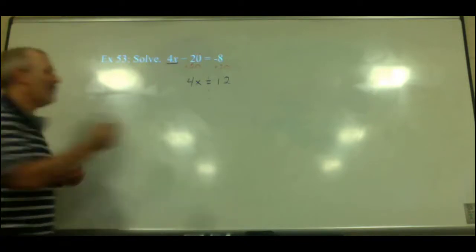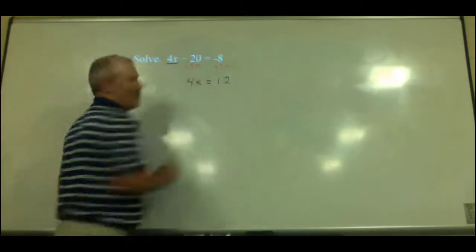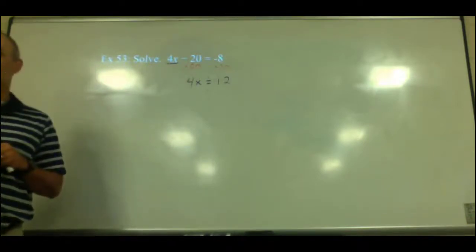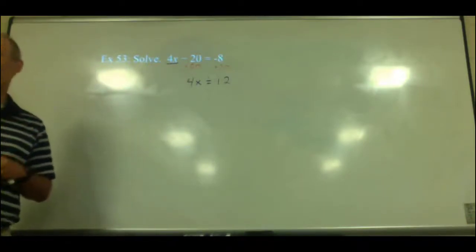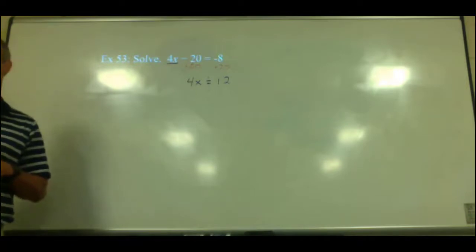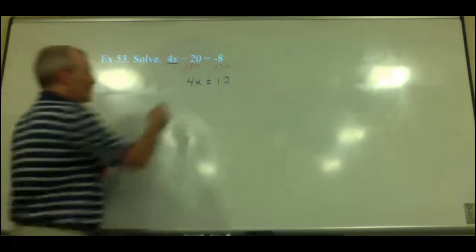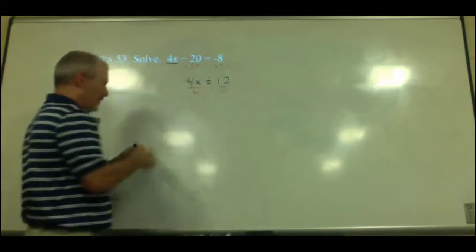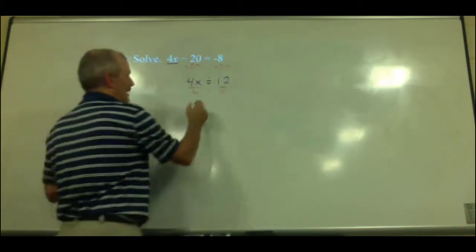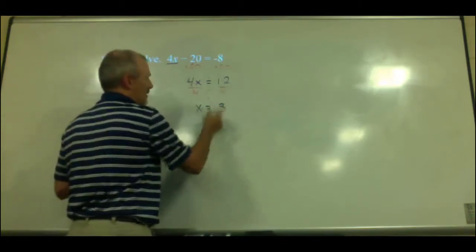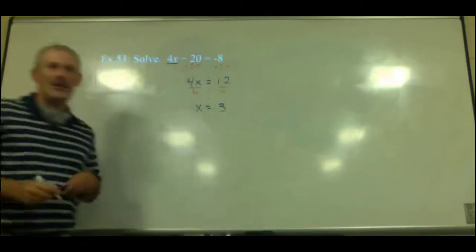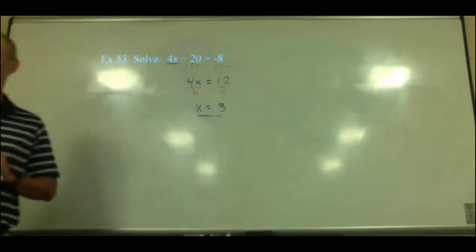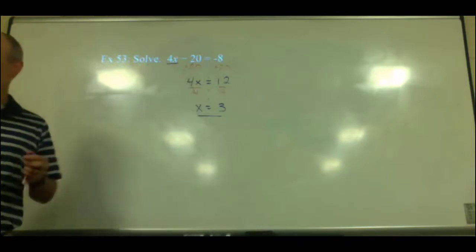Now we have to get rid of the 4. It's 4 times x, so we divide by 4 on both sides. These 4s cancel, and we get x equals 3. This is our solution — once x is by itself, we think we're done.